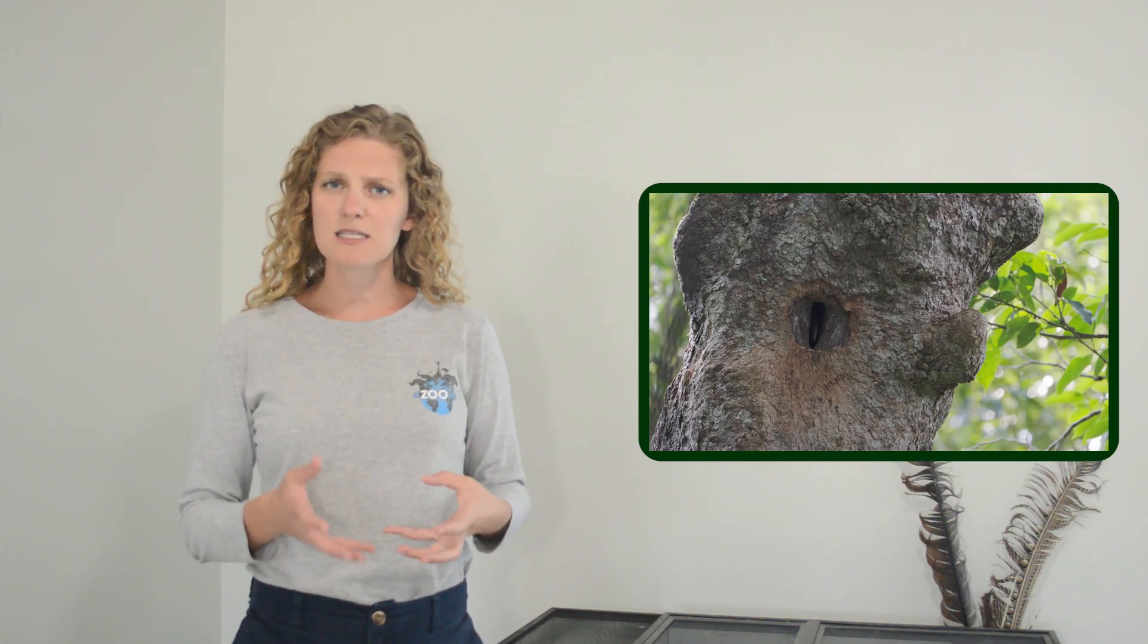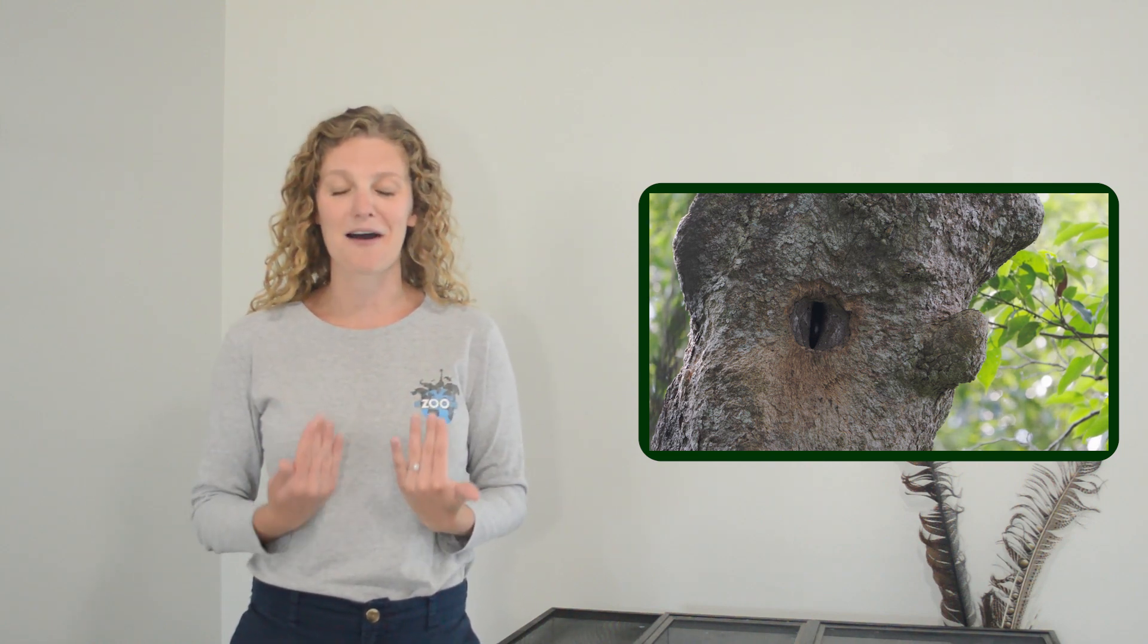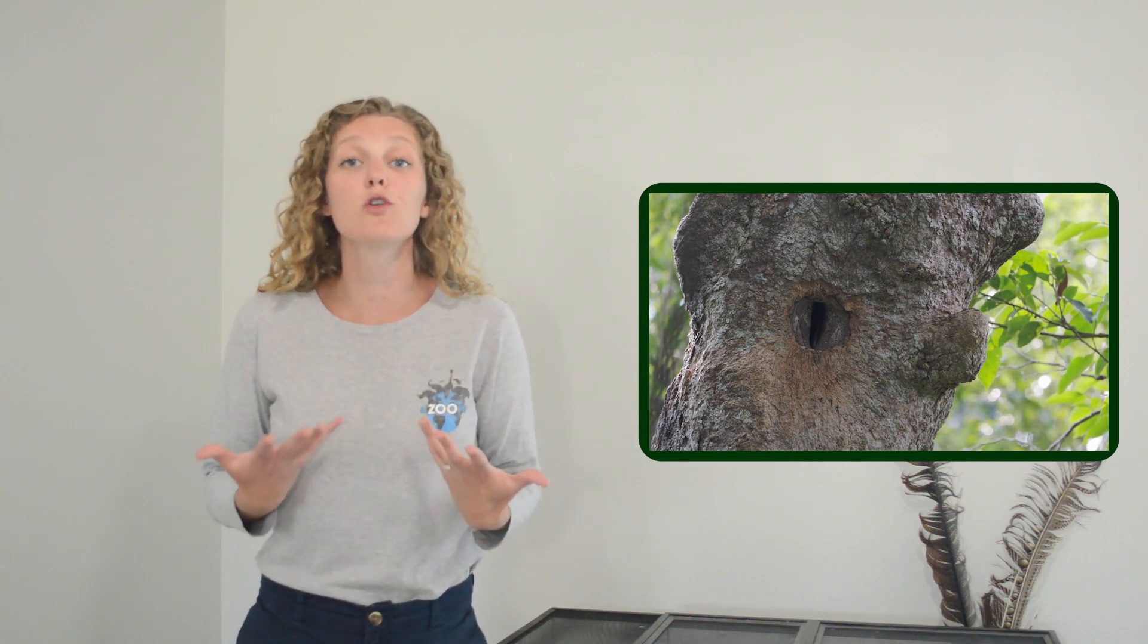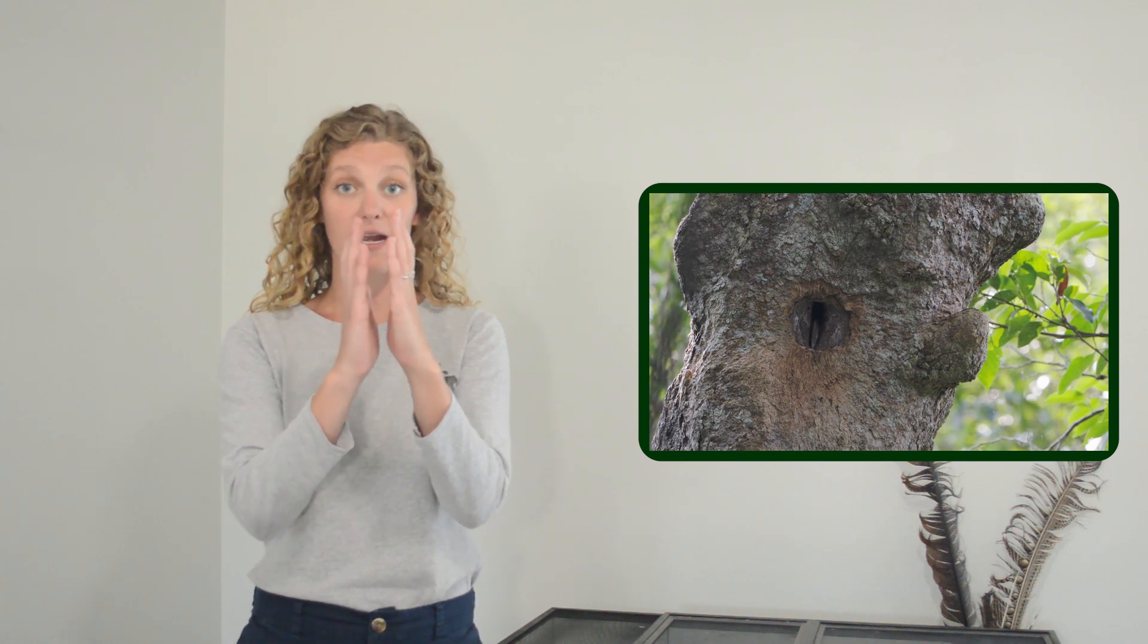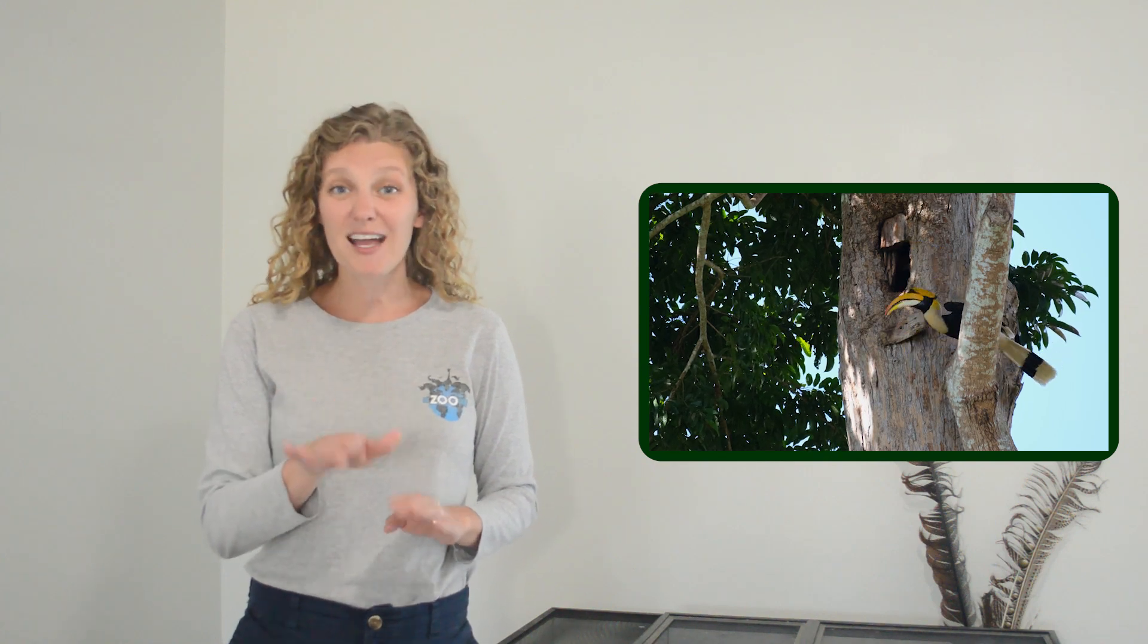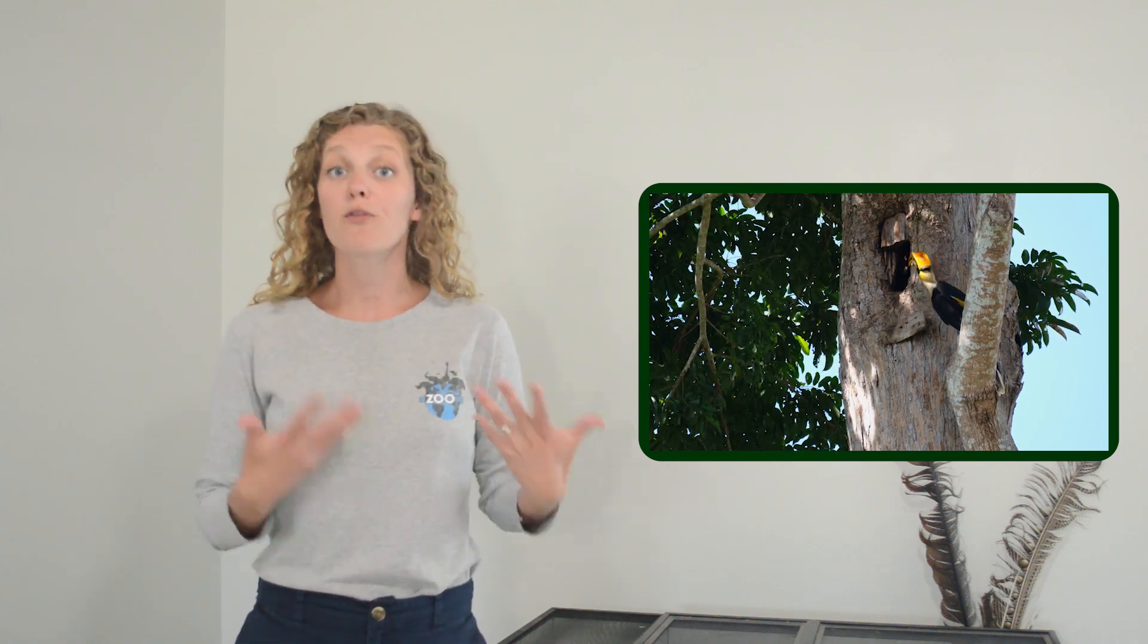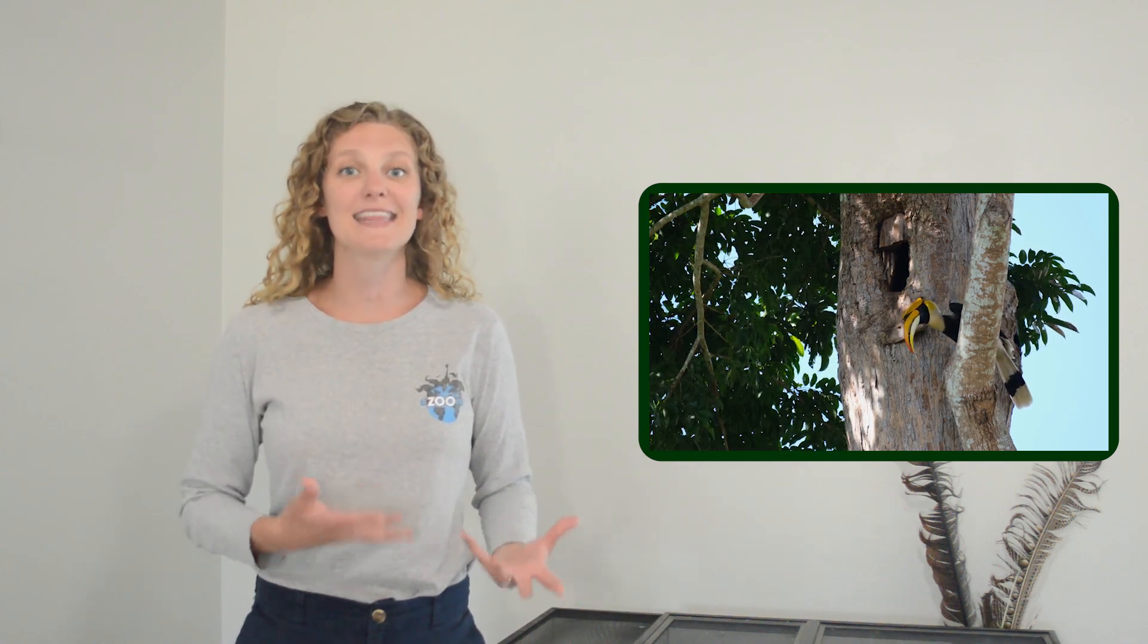Once they've got a nest picked out, they will slowly start to seal the entrance to the nest shut and as they do this, the female traps herself inside. She will stay in that nest for up to about two months. When they seal the nest shut, they leave a very small opening at the entrance where the male will pass food to the female and the chick once it hatches. Both the female and the chick are completely dependent on the male for food and therefore for survival while they're trapped inside the nest.